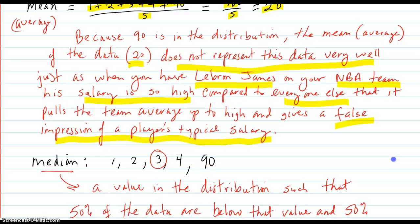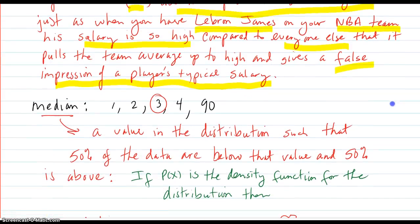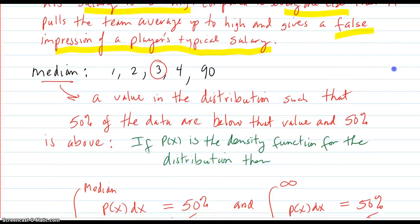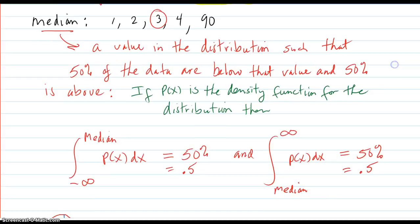So sometimes we need a different measure of the center of the data rather than just the mean, because the mean might be giving us a false impression. So we go to the median.